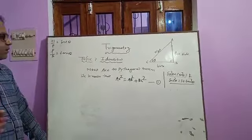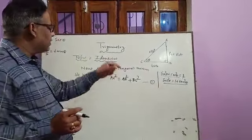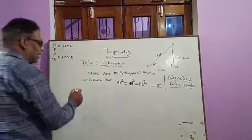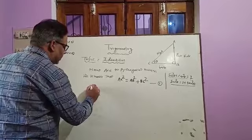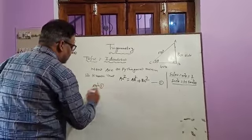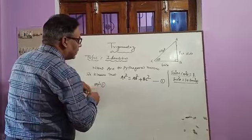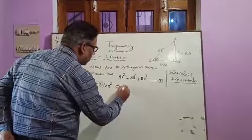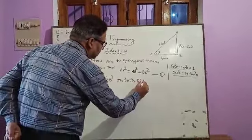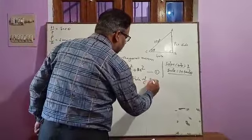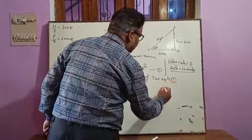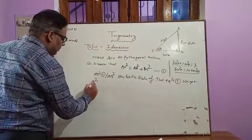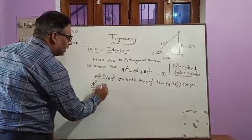The third trigonometric identity is derived by taking the Pythagorean equation and dividing both sides by AB². So we write that the first equation is divided by AB² on both sides. If we divide both sides of equation 1, we get AC² divided by AB², and AB² divided by AB², plus BC² divided by AB².